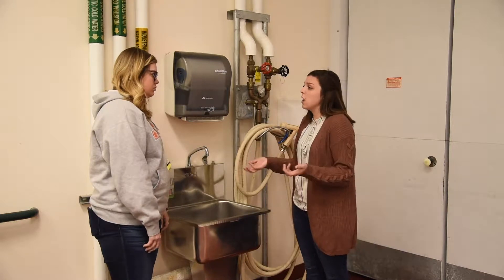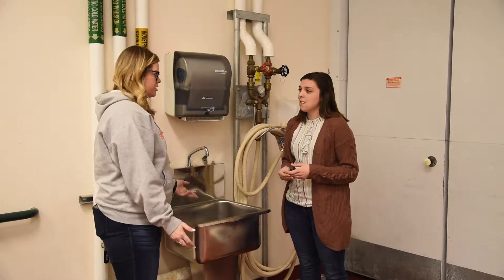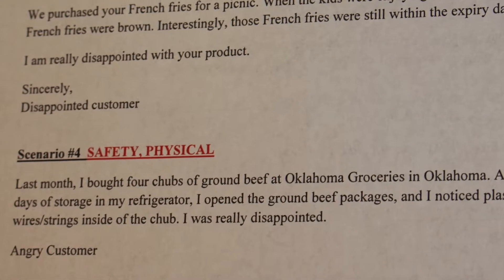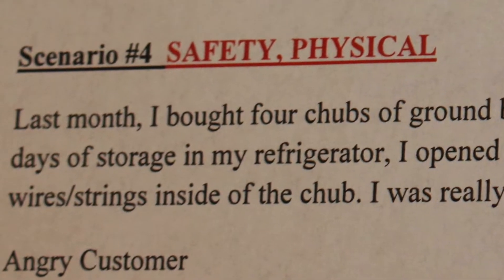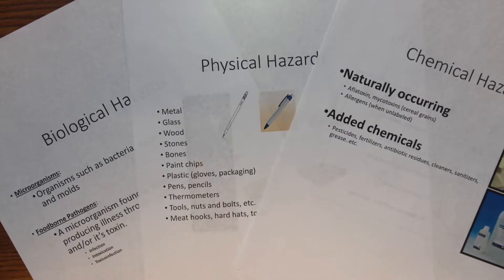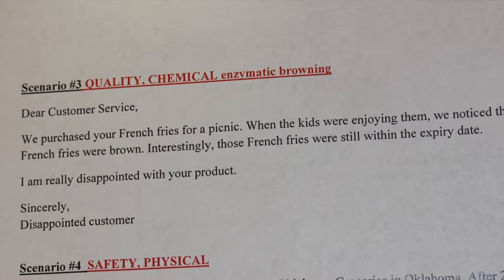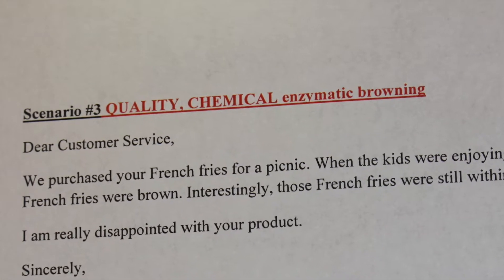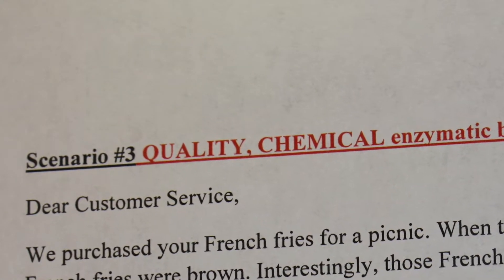For example, a customer inquiry could be a concern about the color of their french fries being darker than expected. Students are given five scenarios where they evaluate the inquiry as either a food quality or food safety concern. A food safety concern could be a metal shard in the product, while a quality concern could be the color or appearance. Once determined, the student evaluates if the hazard was chemical, physical, or biological. Dark french fries would be a quality concern — not harmful to the customer — and chemical, due to enzymatic browning. The final answer would be quality and chemical.